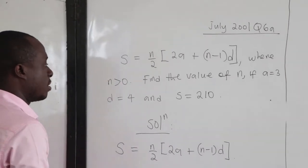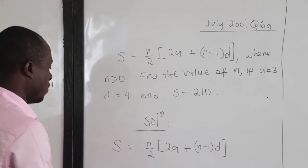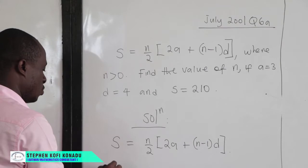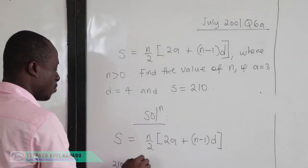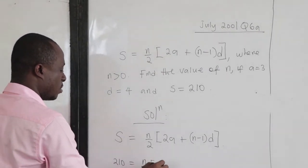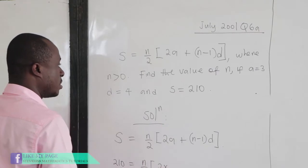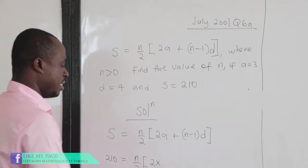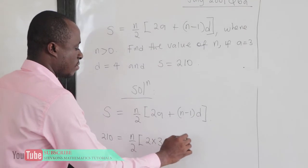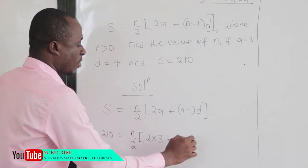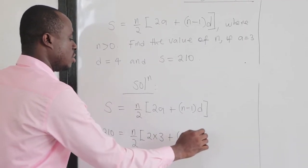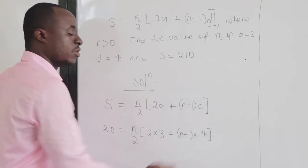From here, we've been given S, which is 210. What is n? We don't know — that is what we want to find. Our a is 3, and d is equal to 4.